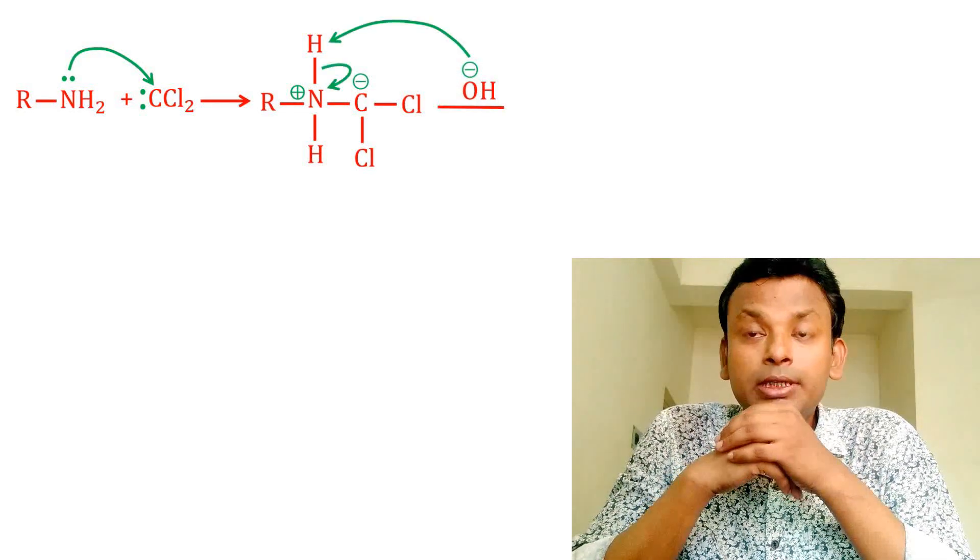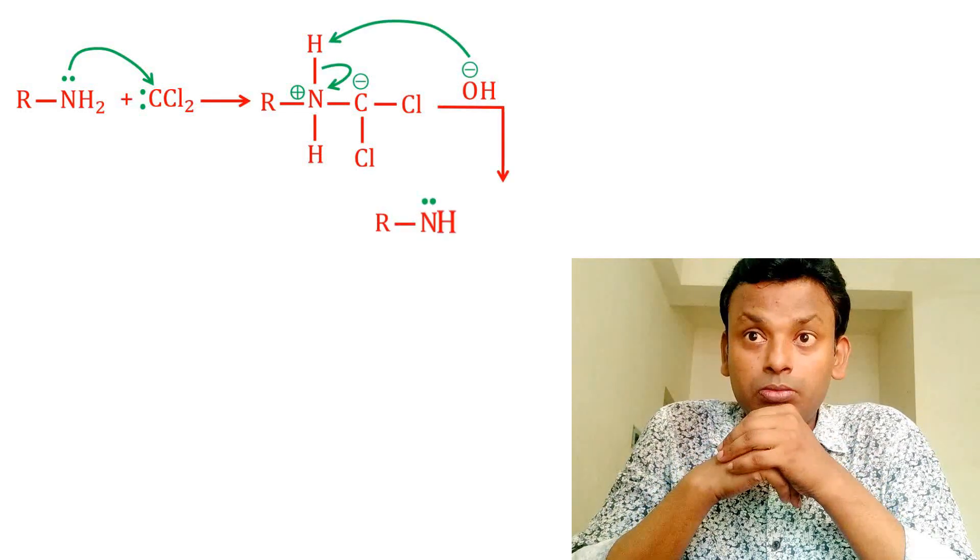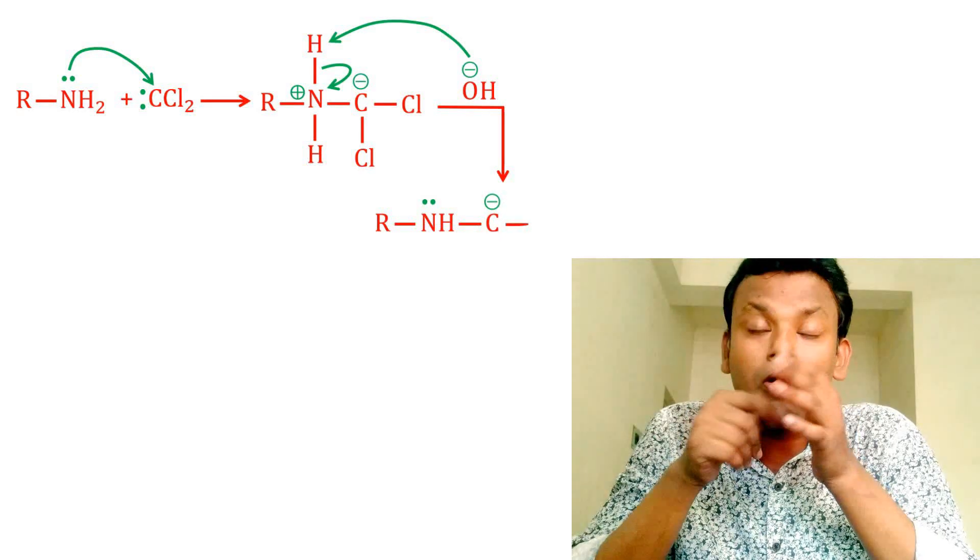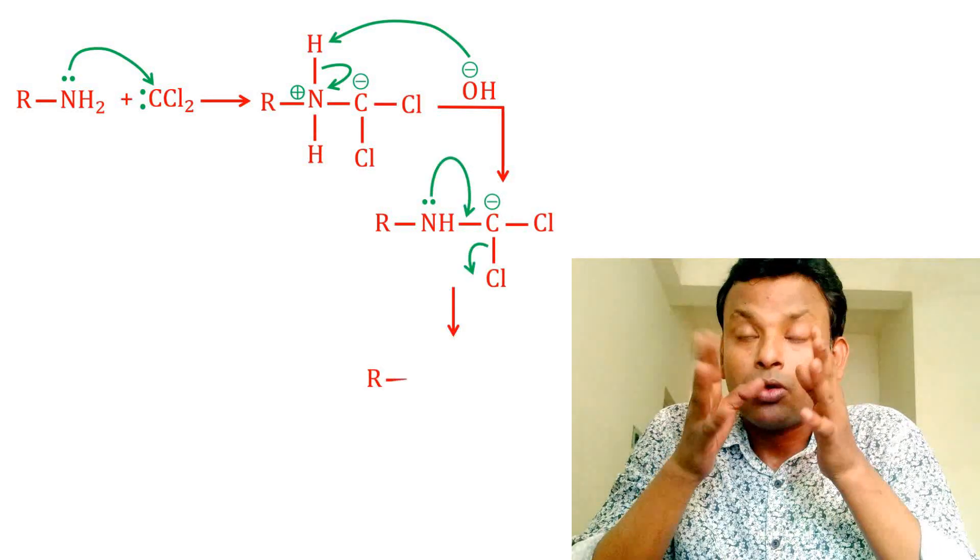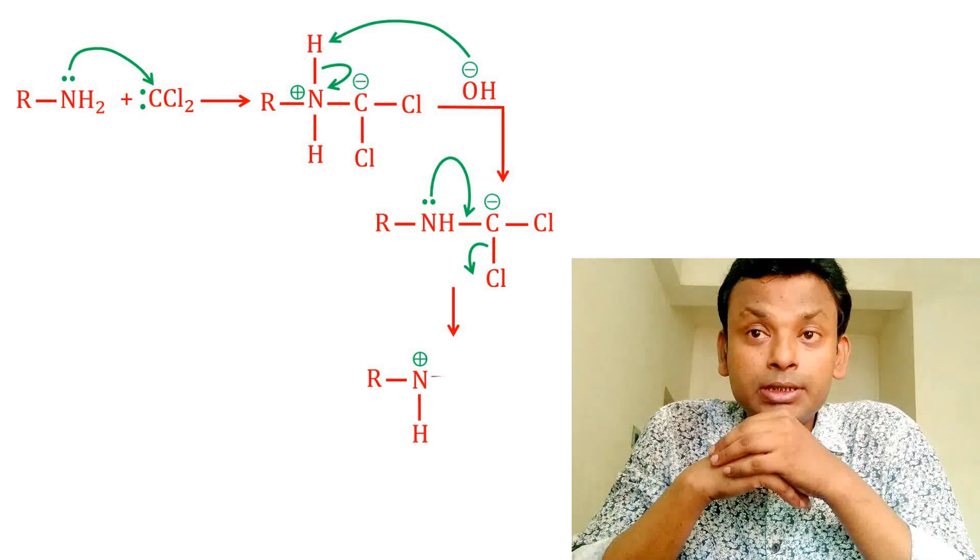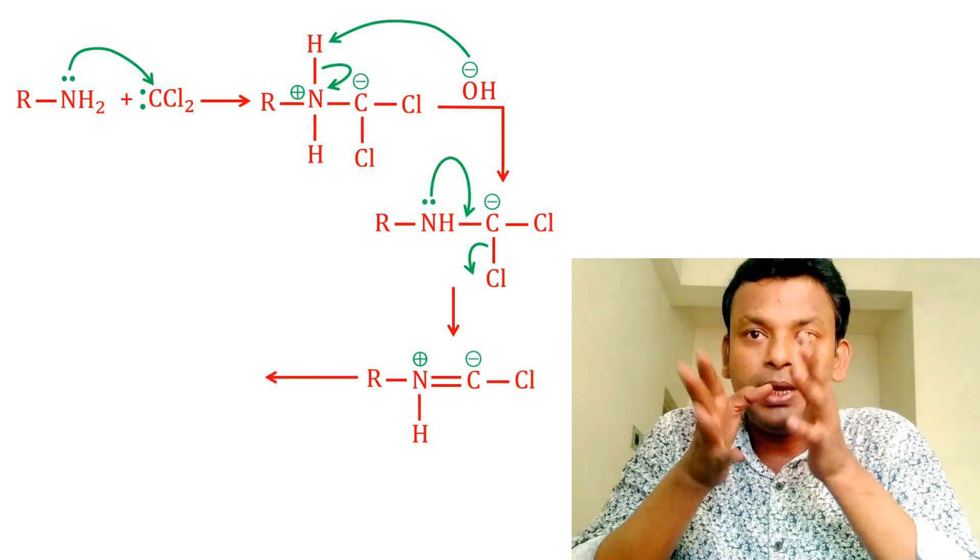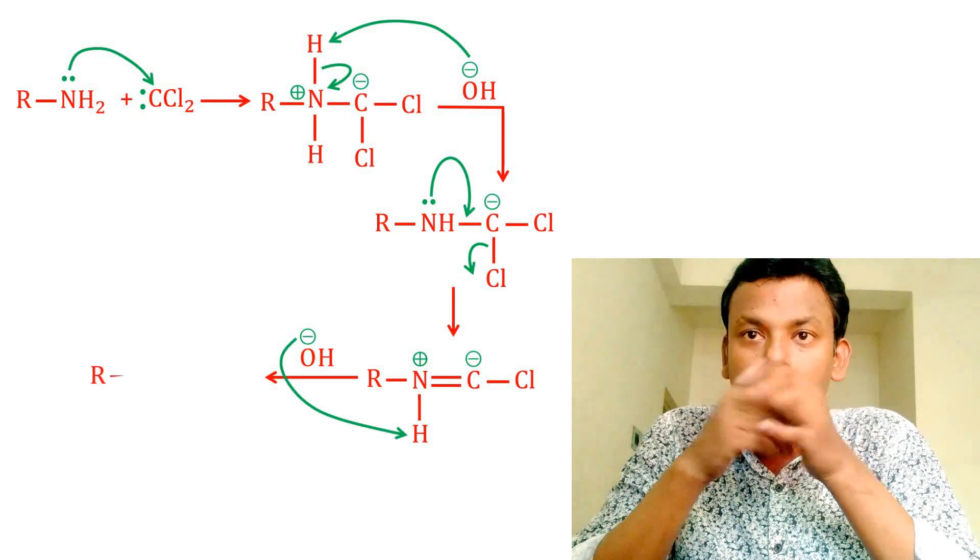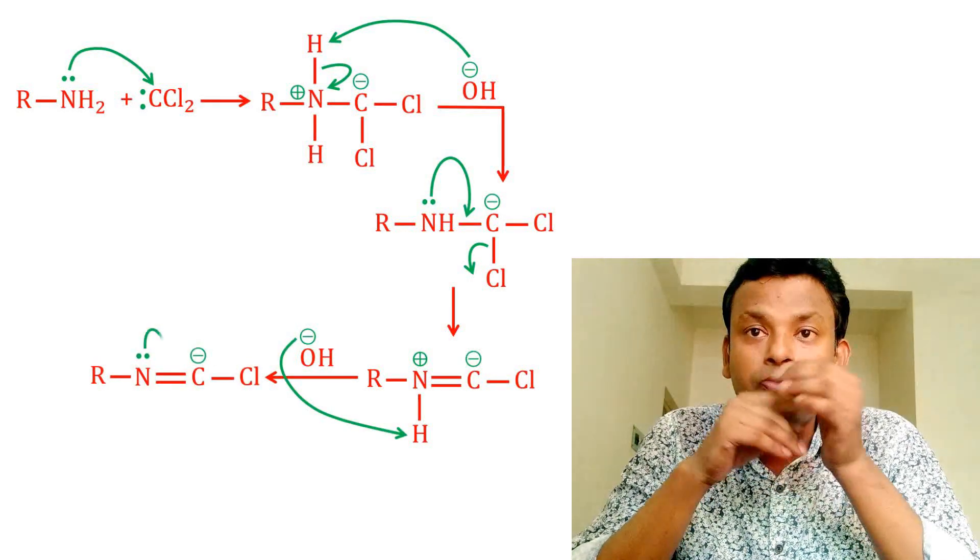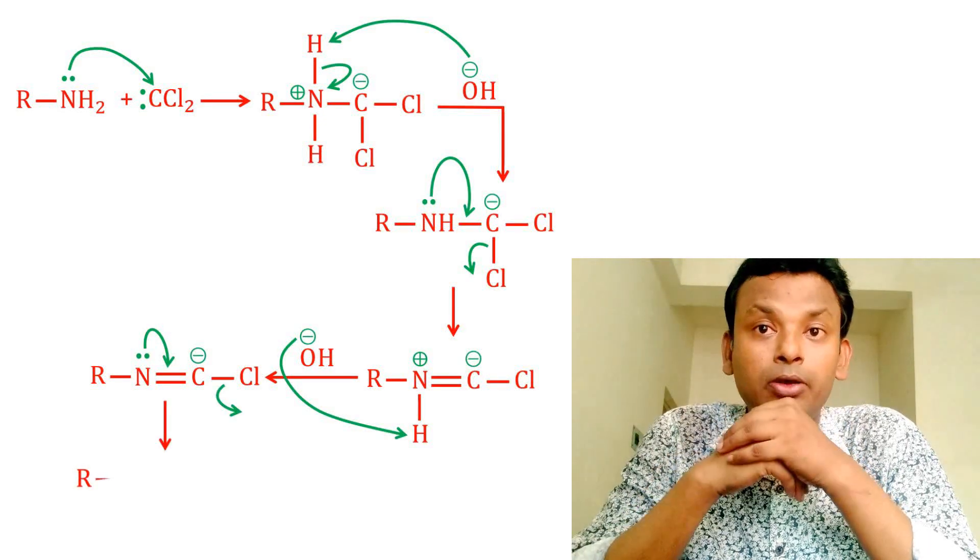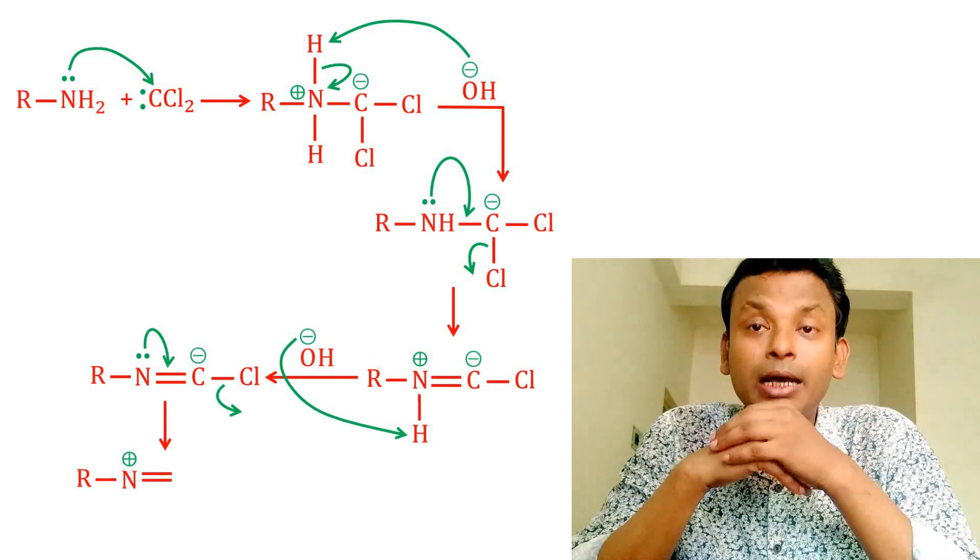The lone pair of this compound leaves the chlorine atom from this compound. Again, the base accepts a proton from this compound and the lone pair of nitrogen forms a bond and the chlorine atom leaves to form isocyanide, that is R-N≡C, alkyl isocyanide.